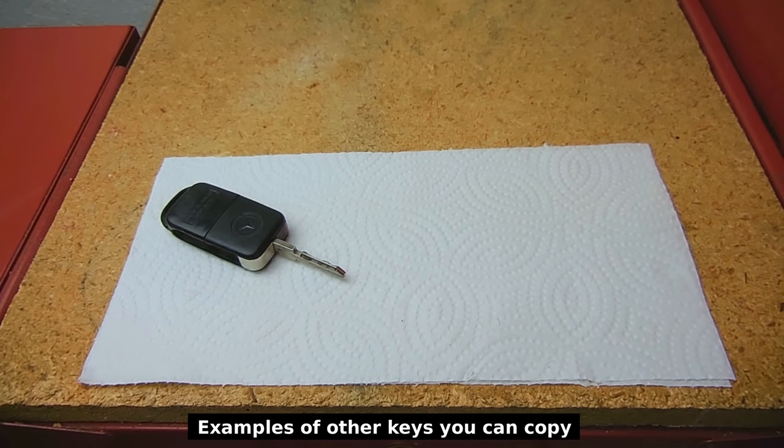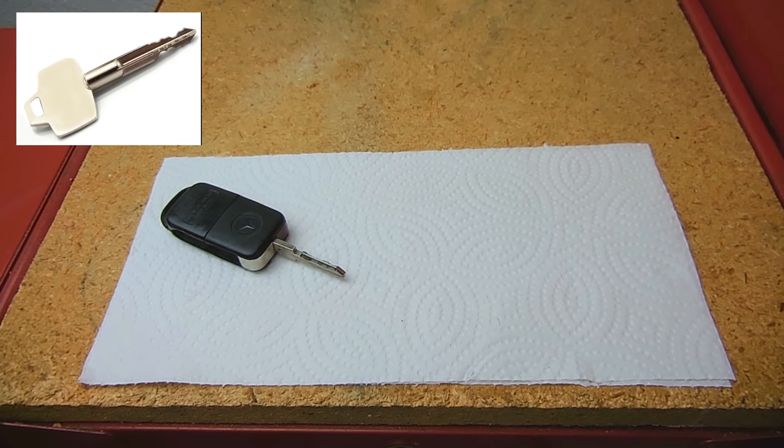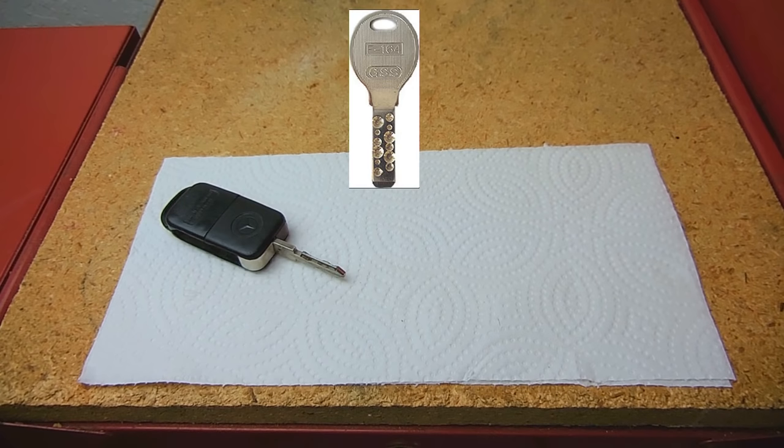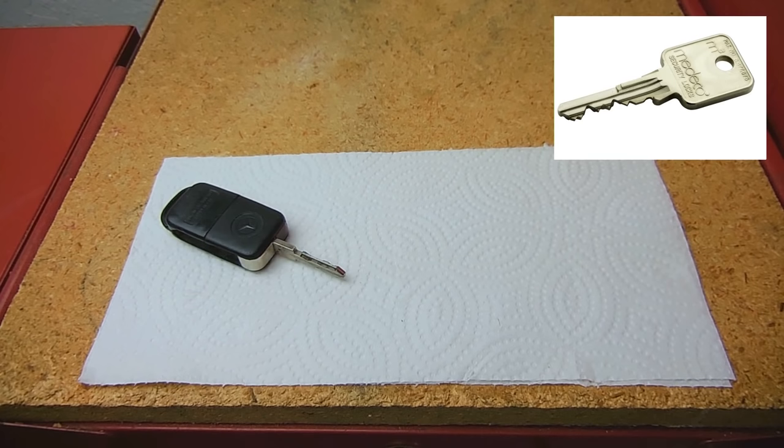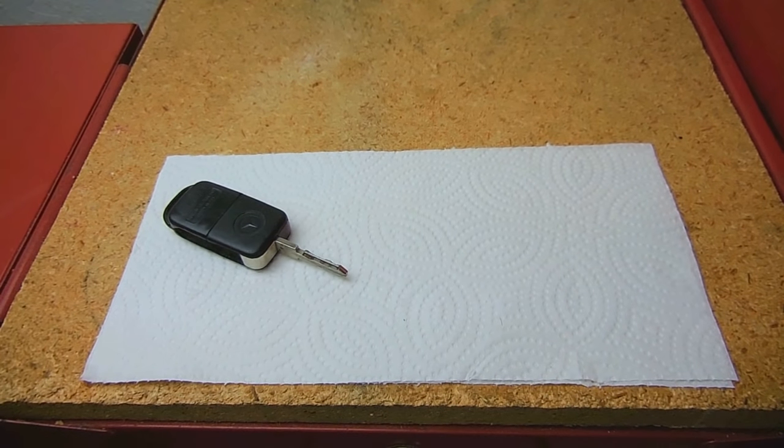Unlike all the videos on YouTube which show very crude ways of duplicating simple pin tumbler keys by using a photograph, soot from a flame, or ink from a marker to duplicate the key profile with tape, which would then be cut from a piece of sheet metal, this particular method is not shown anywhere on YouTube or other places online.